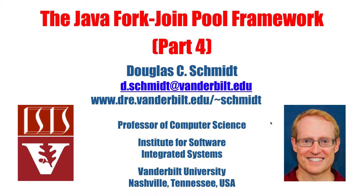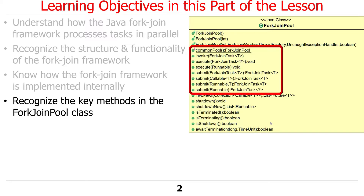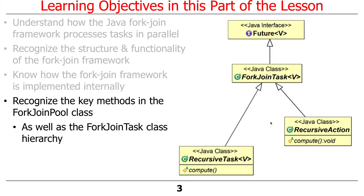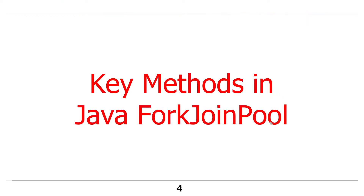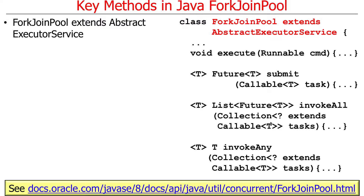Now that we've covered essentially the conceptual parts of the ForkJoin pool, what I want to do is talk about some of the key methods that you'll use, both with the ForkJoin pool as well as the ForkJoin task class hierarchy. These are actually what you'll do for the next programming assignment, assignment 2. So when you look at the code...